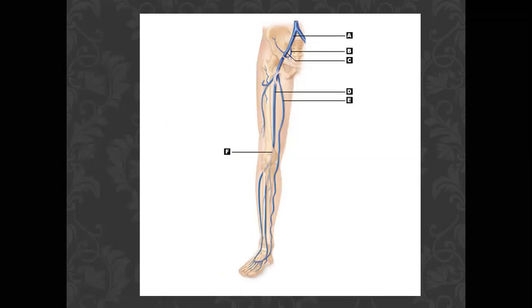Now for the veins of the lower limb. There are deep veins with the arteries — such as the femoral vein and popliteal vein — and superficial veins. The superficial veins start from the dorsal venous arch on the dorsum of the foot, similar to the hand.